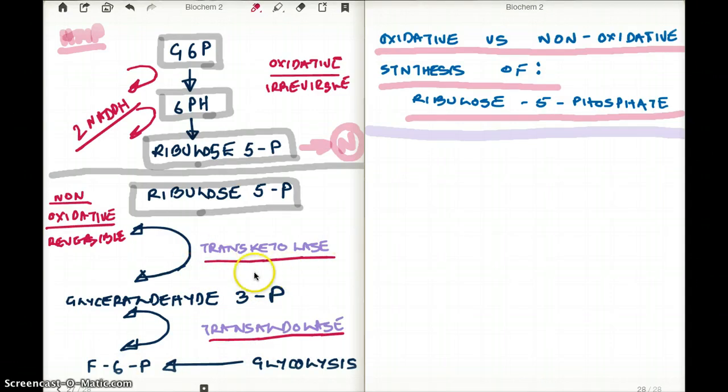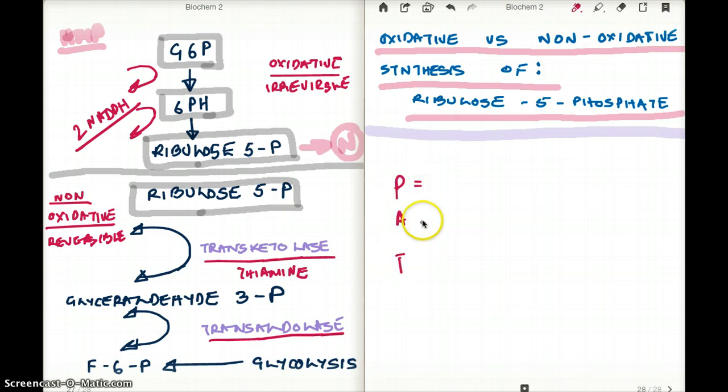Now this transketolase also uses a cofactor, and the cofactor is thiamine. There are three enzymes where thiamine is used as a cofactor: pyruvate dehydrogenase (P), alpha-ketoglutarate dehydrogenase (A for alpha), and transketolase (T). These are the three enzymes where we use thiamine.